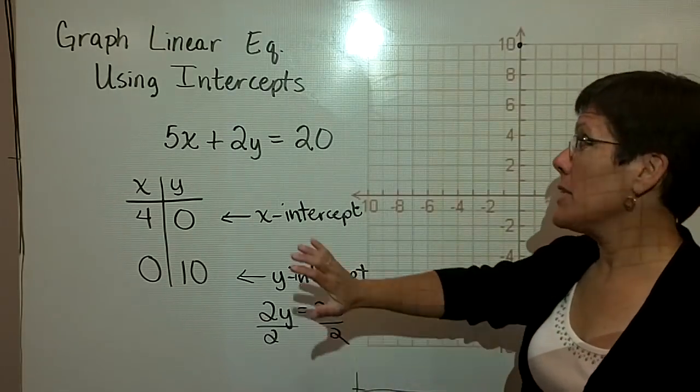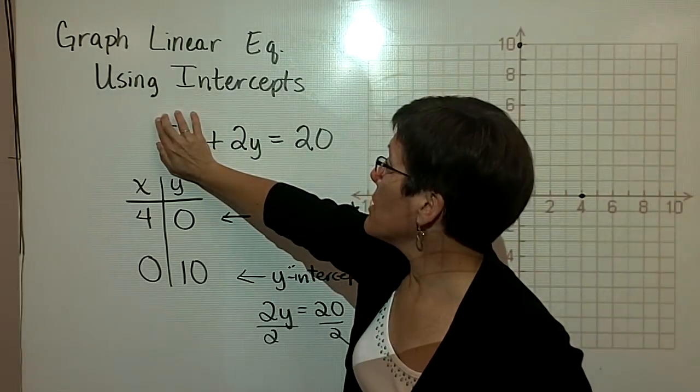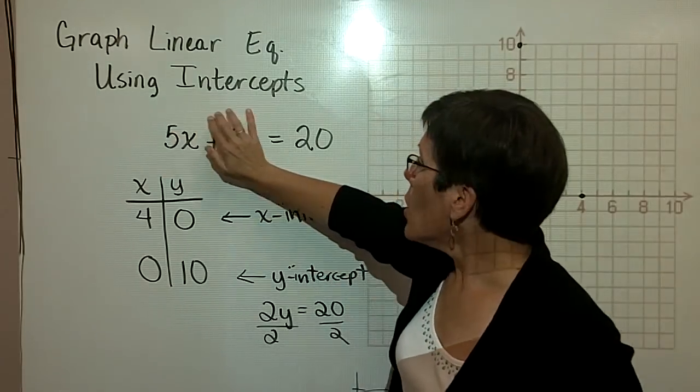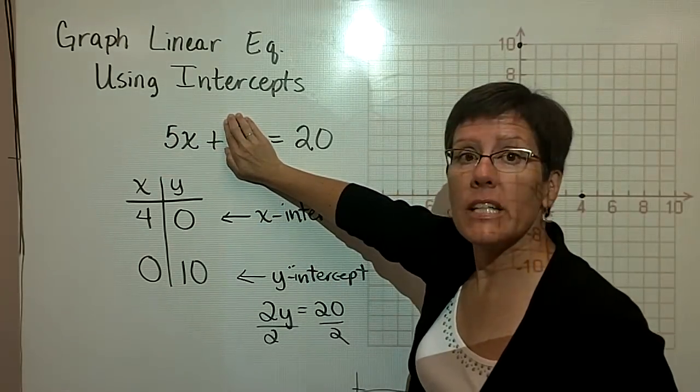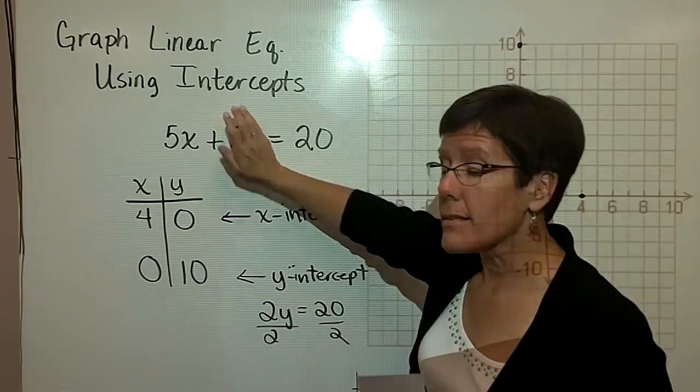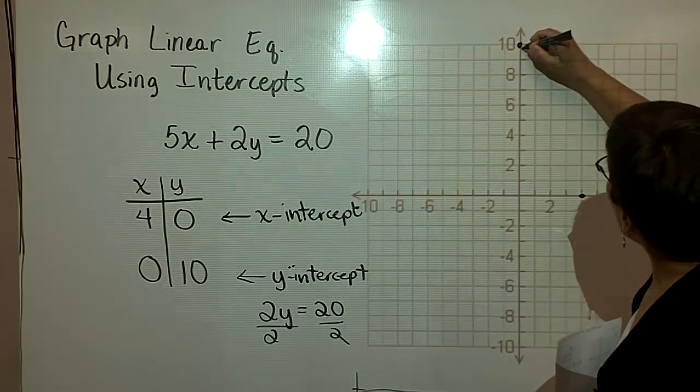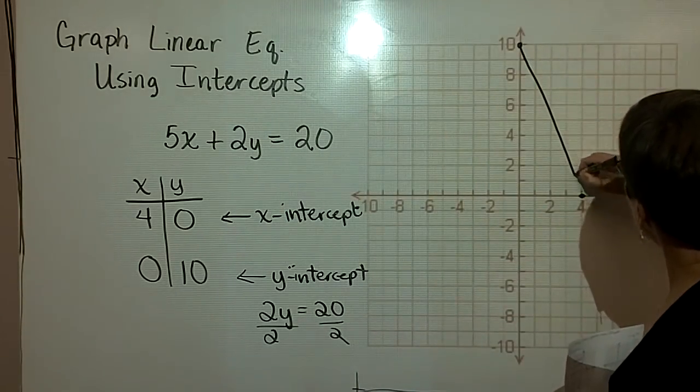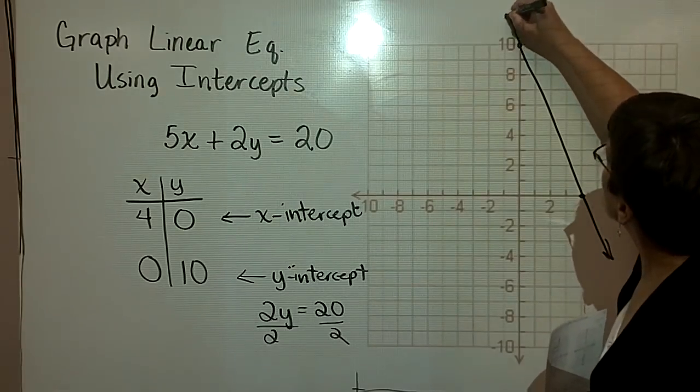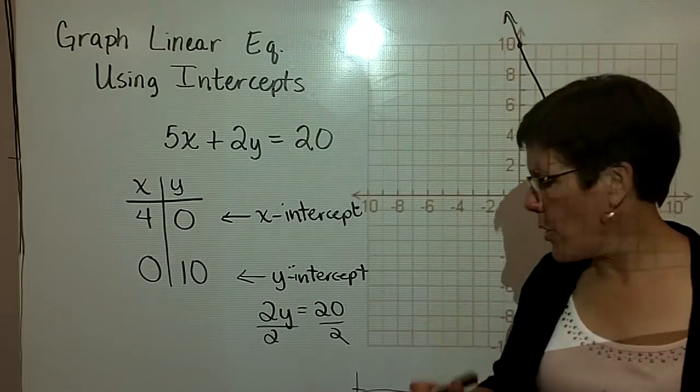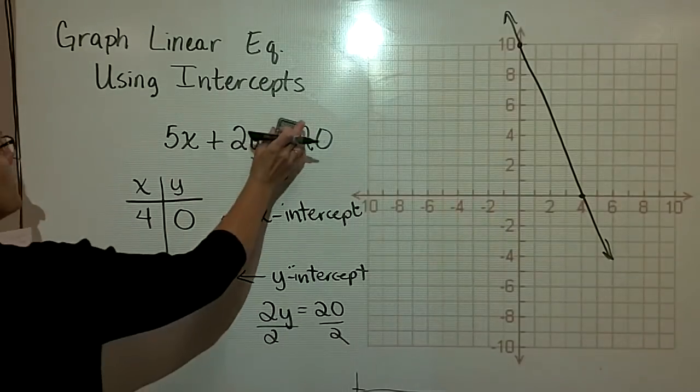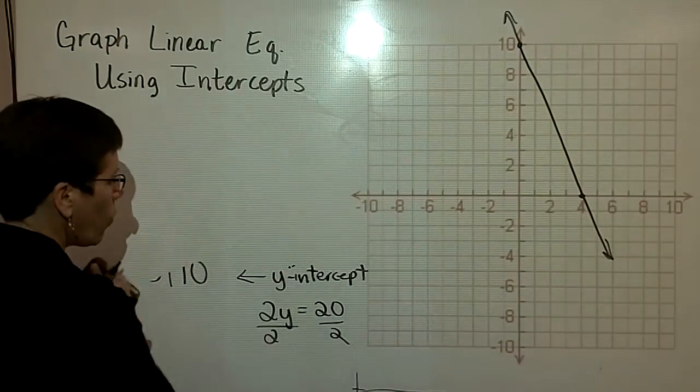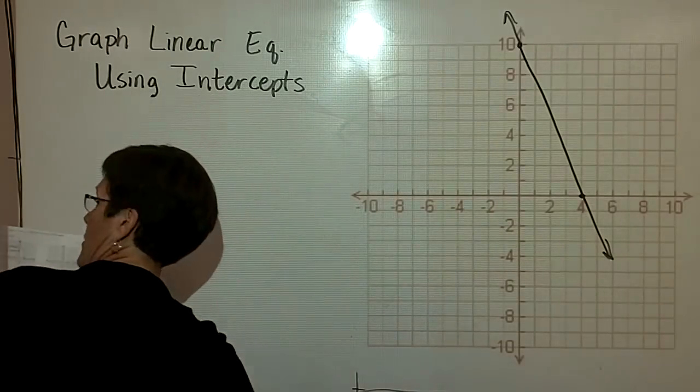And that's a pretty easy thing to do, to cover that term up and to divide both sides by 2 to find out what y is, or to cover this up and divide both sides by 5 to find out what x is. And so I personally tend to just graph those two ordered pairs and draw a straight line between them, and I'm done. Let's go ahead and look at one more, and then I'll share with you when I might not use intercepts.